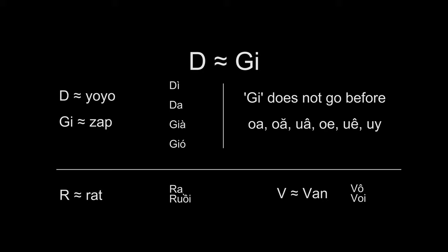On the right side of the video, you can see that G-I has some rules to it. It does not go before certain syllables, as you see mentioned. On the bottom of the video, you can see that I added the letter R. Some dialects say the R as zh instead of ruh. For example, instead of rà, rùi, they say zà, zùi.